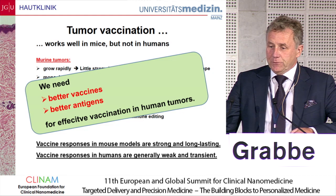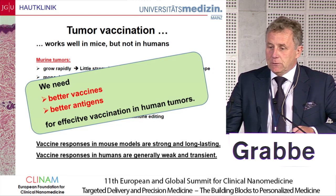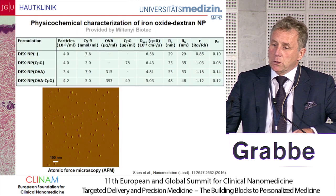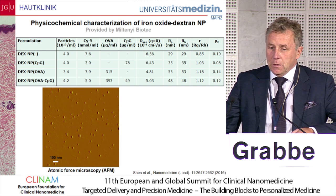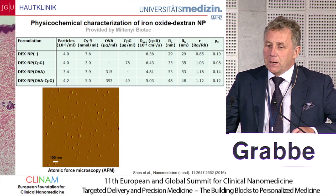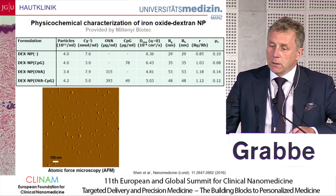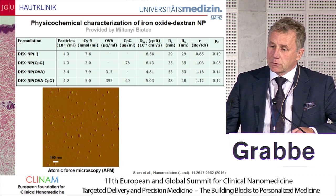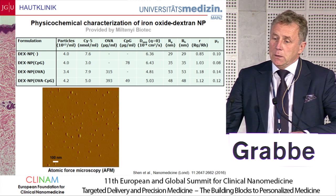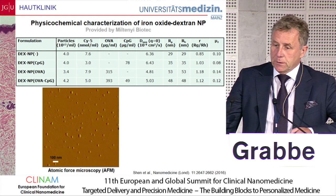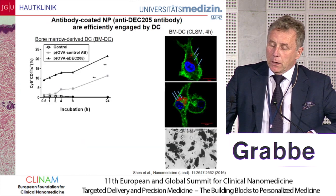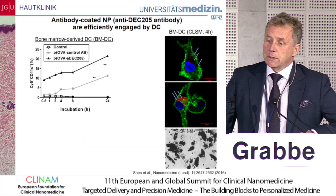Any kind of peptide or protein-based vaccines in human tumors have failed so far. There is definitely a need for better vaccines and also better antigens. We used nanoparticles that are commercially available from Miltenyi Biotech — dextran iron oxide nanoparticles decorated with an antigen, CPG as a dendritic cell activator, and DEC-205 as a targeting agent for dendritic cells.